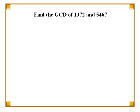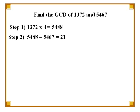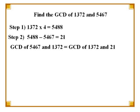Let's try one final example. We will find the greatest common divisor of 1372 and 5467. The first step, as before, is to multiply 1372 by a number to get a product close to 5467. We multiply 1372 by 4 to get 5488, which is the product closest to 5467. In the next step, we subtract 5467 from 5488, which gives us 21. The greatest common divisor of 1372 and 5467 should equal the GCD of 1372 and 21.